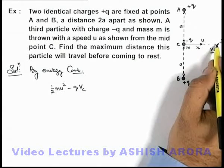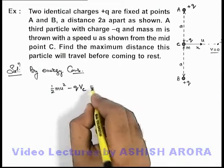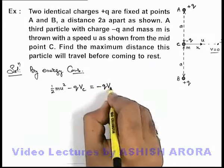When it reaches point D, its kinetic energy will be zero, so its total energy will be only interaction energy which can be written as -qVd.